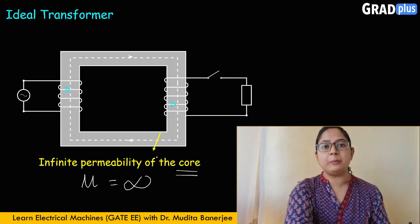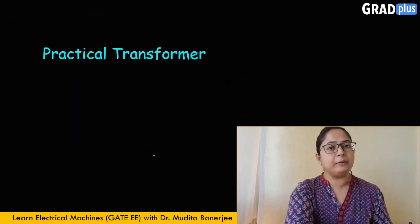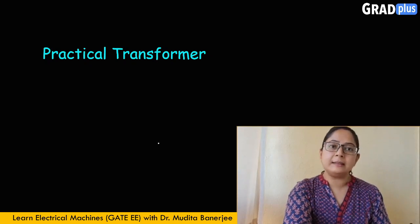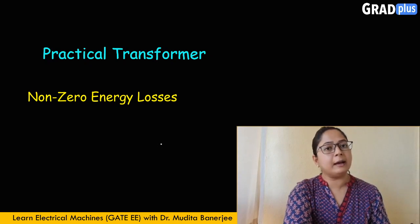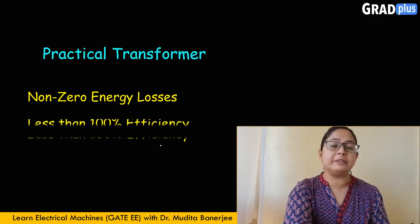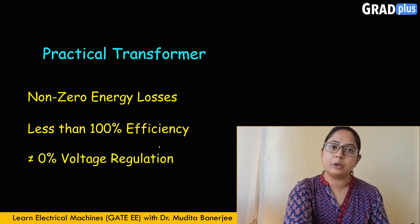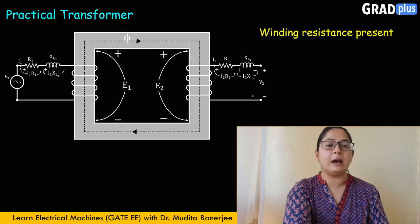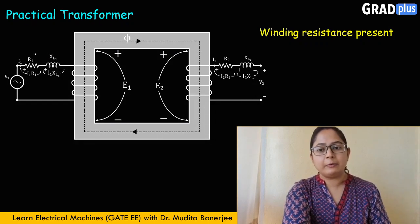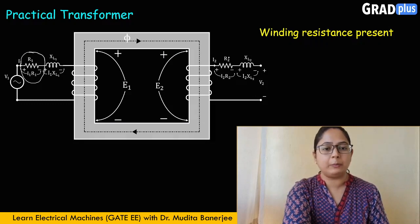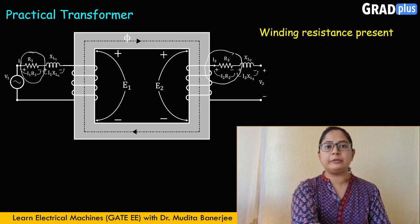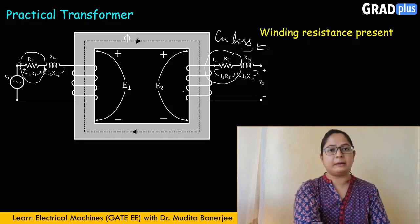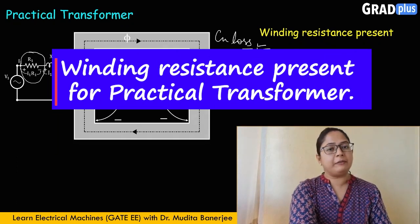All these characteristics are present in the practical transformer. A practical transformer is a real-time transformer which has energy losses in it. The core has finite permeability, its efficiency is not equal to 100%, and the voltage regulation is not equal to 0%. The first point is it has winding resistance — winding resistances R1 and R2 are present in a practical transformer, as seen in the diagram. The presence of winding resistance means copper losses are also present, which decreases the efficiency of the transformer.